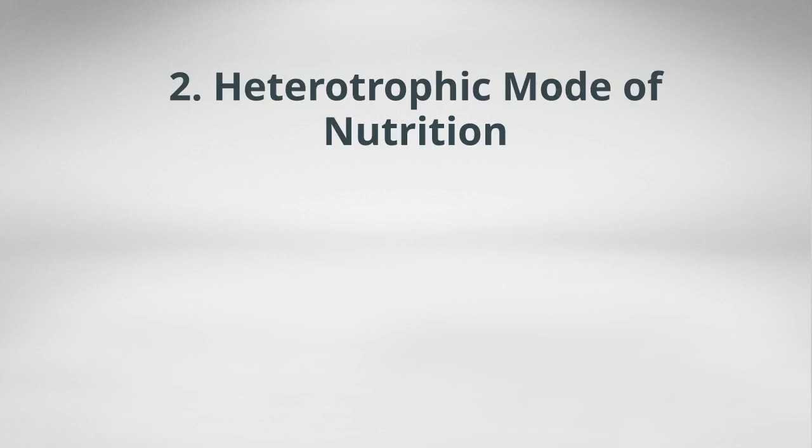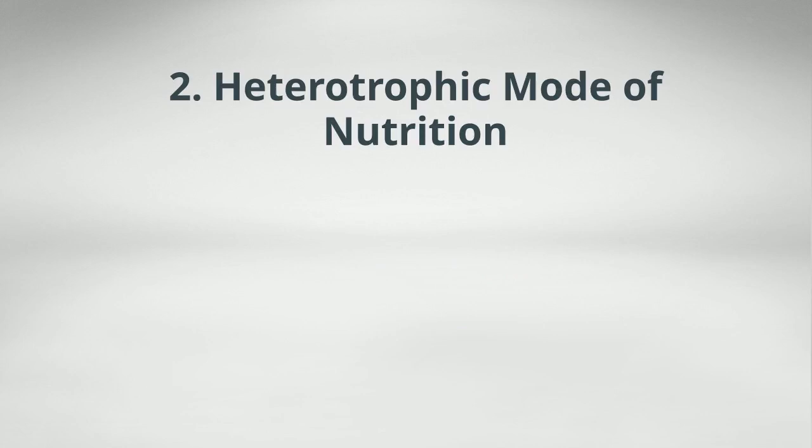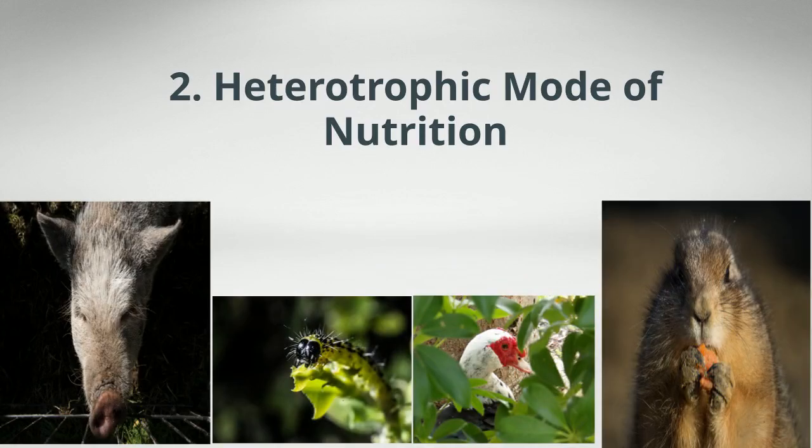Heterotrophic mode of nutrition. In Greek, hetero means different and trove means nutrition, which means different nutrition. In heterotrophic mode of nutrition, organisms cannot prepare their own food and hence depend on autotrophic organisms for their food. This type of nutrition is seen in animals, fungi, and in most bacteria.